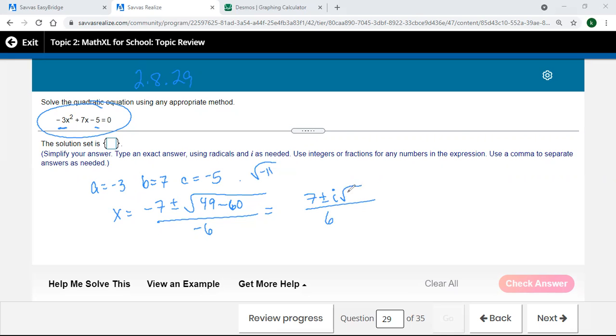So the negative part gets out as the i, the square root of negative 1. And then the 11 is going to be there. So that's going to be what my two solutions look like that I need to type in here.